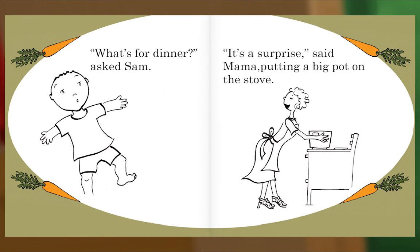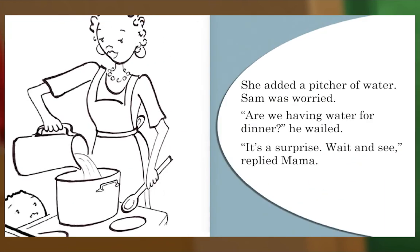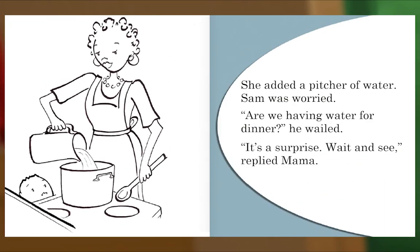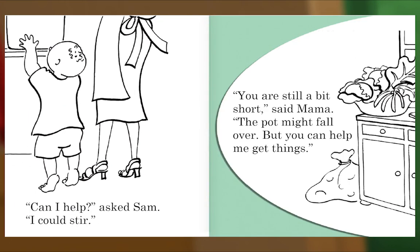'What's for dinner, what's for dinner?' asked Sam. 'It's a surprise,' said Mama, putting a big pot on the stove. She added a pitcher of water. Sam was worried. 'Are we having water for dinner?' he wailed. 'It's a surprise, wait and see,' replied Mama. 'Can I help?' asked Sam. 'I could stir.' 'You are still a bit short,' said Mama. 'The pot might fall over, but you can help me get things.'